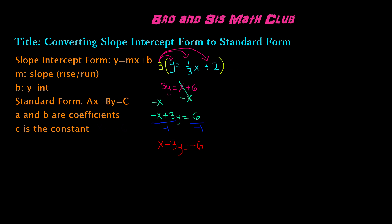Therefore, our a value has now become positive, and our standard form equation for y equals one-third x plus two is x minus three y equals negative six. This is how you convert slope-intercept form equations to standard form. Thanks for watching this video, and we will see you guys next time. Bye!